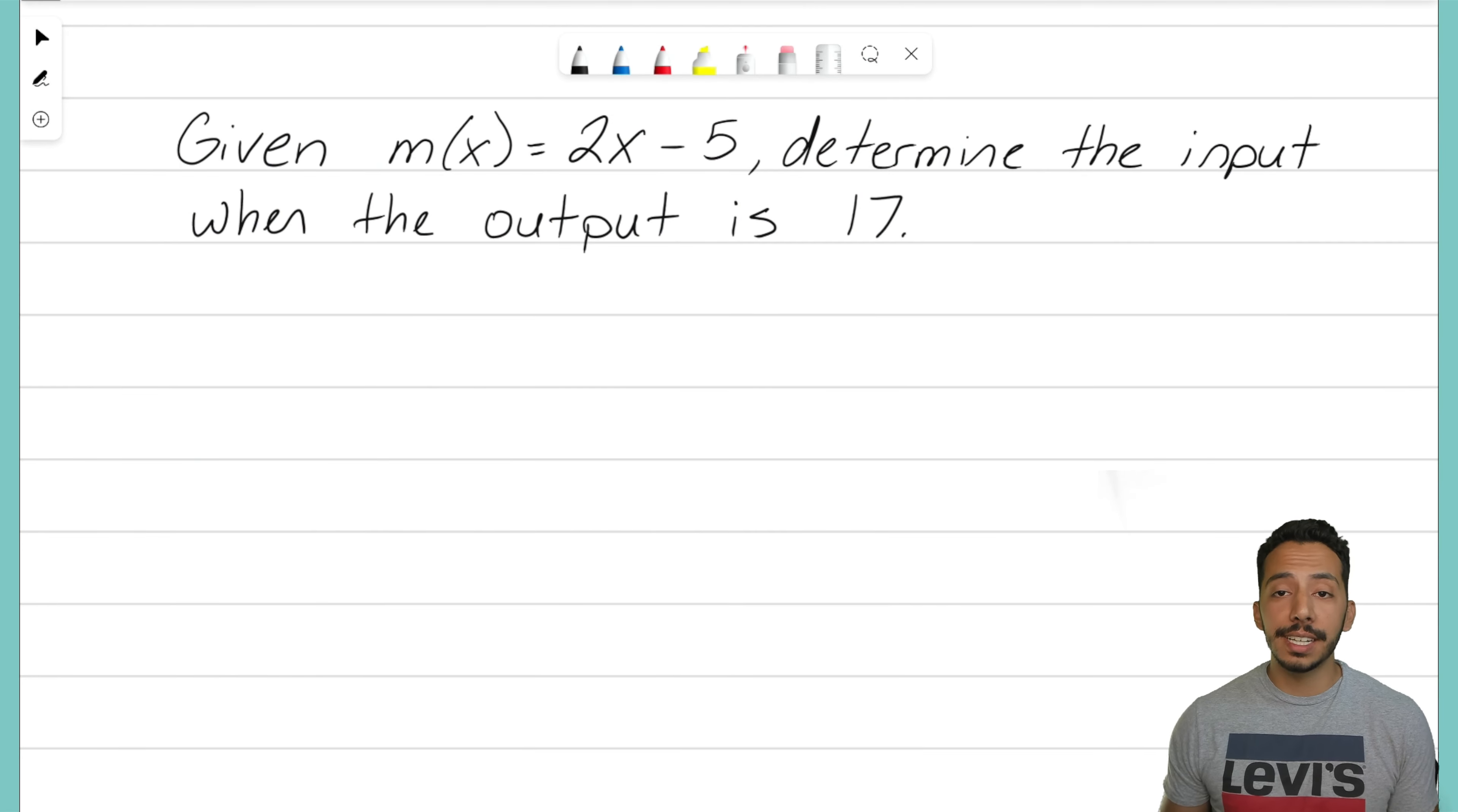Let's jump right into this example problem where it shows us given the function m(x) equals 2x minus 5, we want to determine the input when we know that the output is 17.